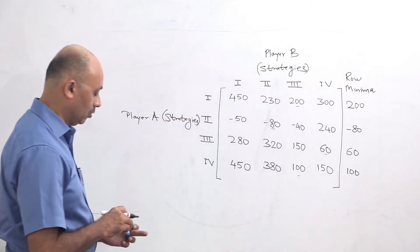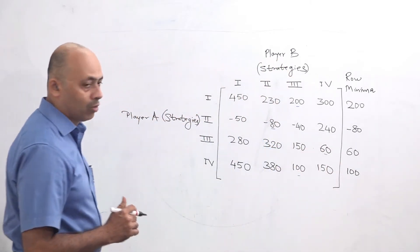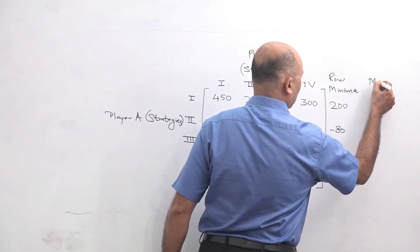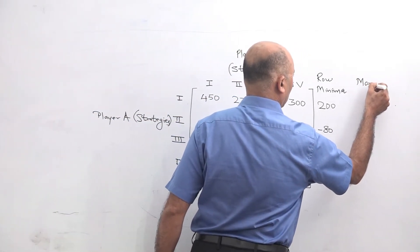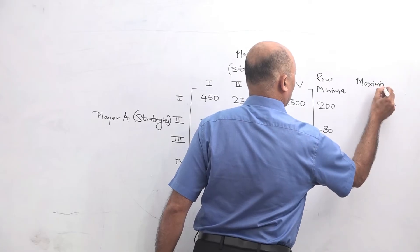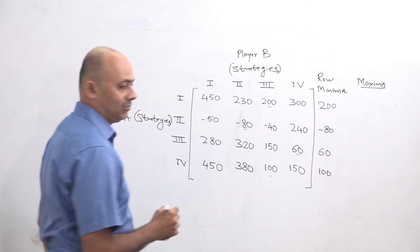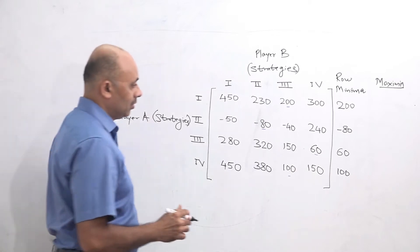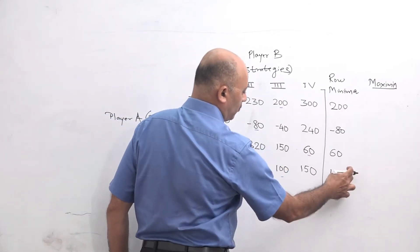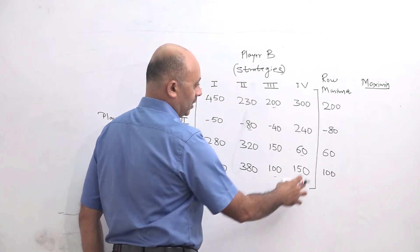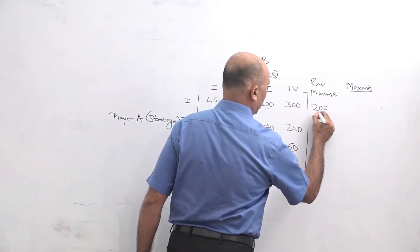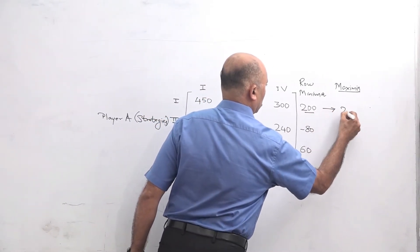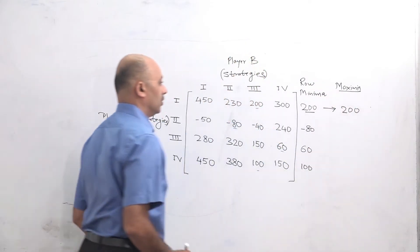This is how we calculate the row minima. The next step is calculating Maximin. Maximin means maximum out of minimum. So when you compare all the row minima values, the highest value is 200. So we will write Maximin as 200. This is the Maximin value for player A.